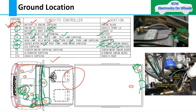E8 is the starter motor earthing, given on the engine block. E9 is the alternator earthing, also given on the engine block. Then you have E10, which is the chassis earthing for the rear of the vehicle.